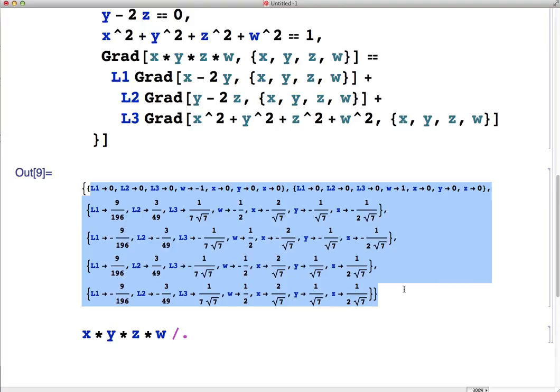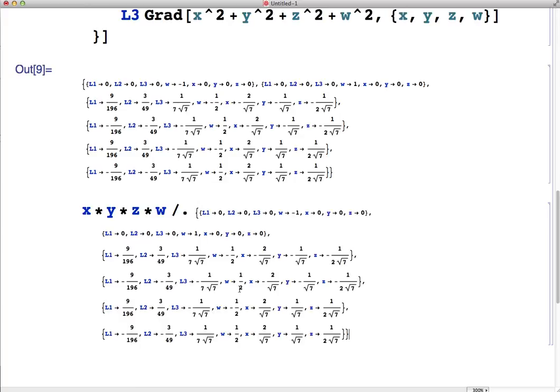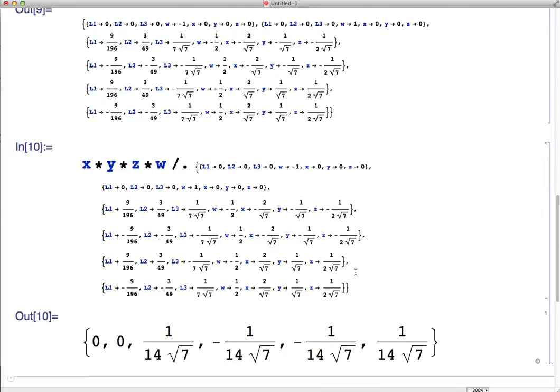And then we're just going to copy and paste all these substitution rules that solve outputted for us, and put those after slash dot, and it's going to substitute all of these six solutions into our f, and give us all the outputs. And there they are.